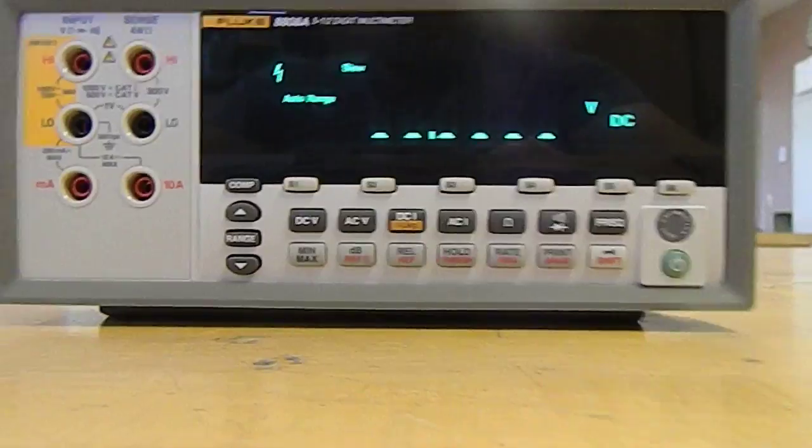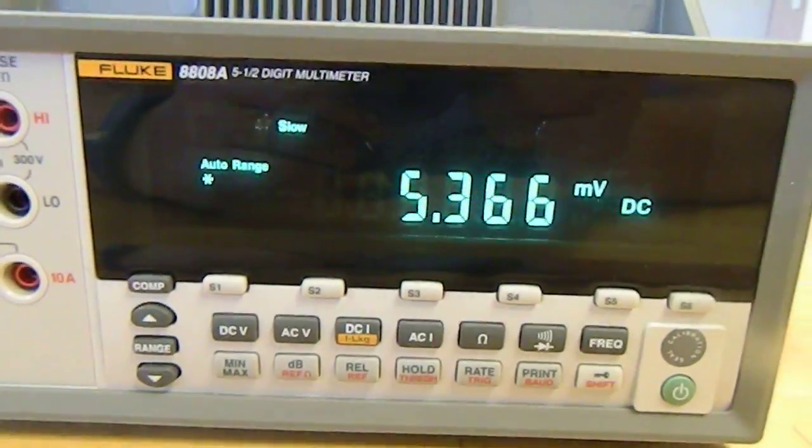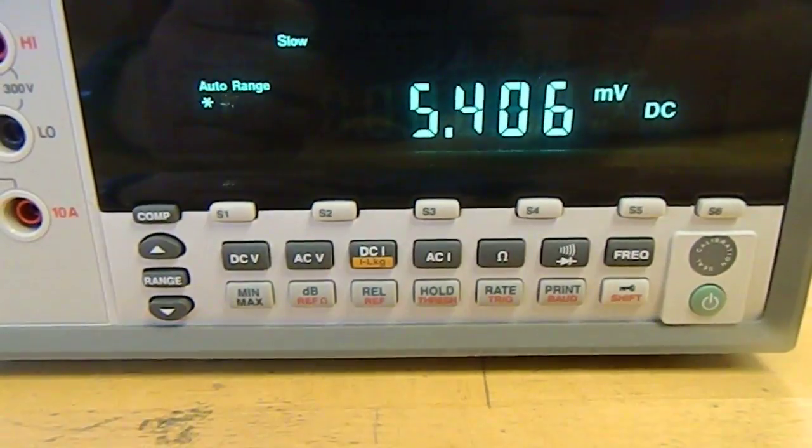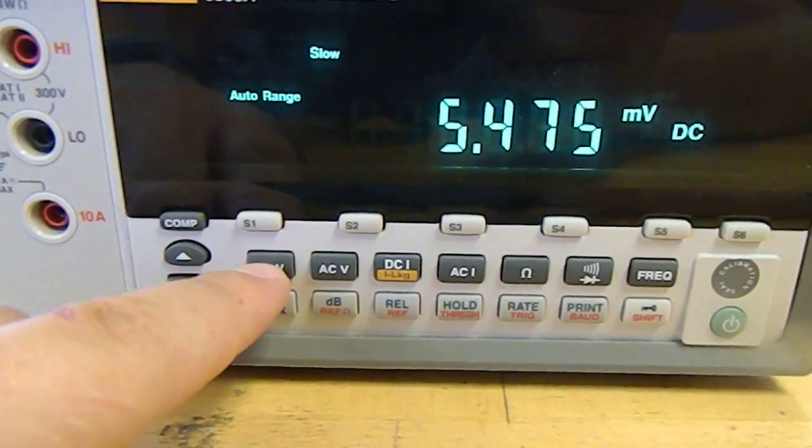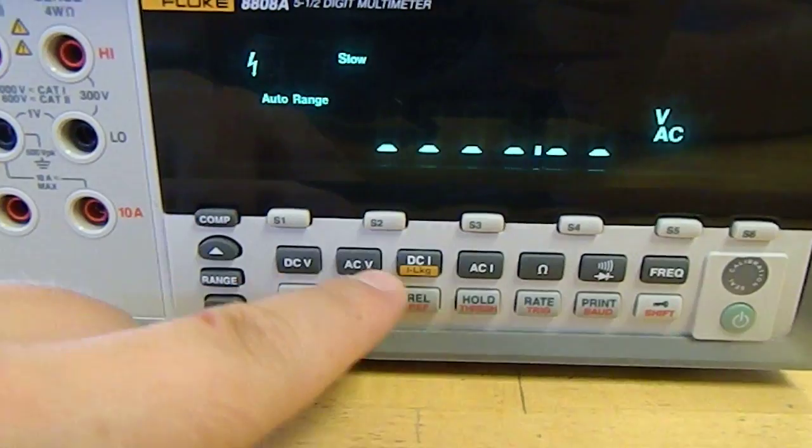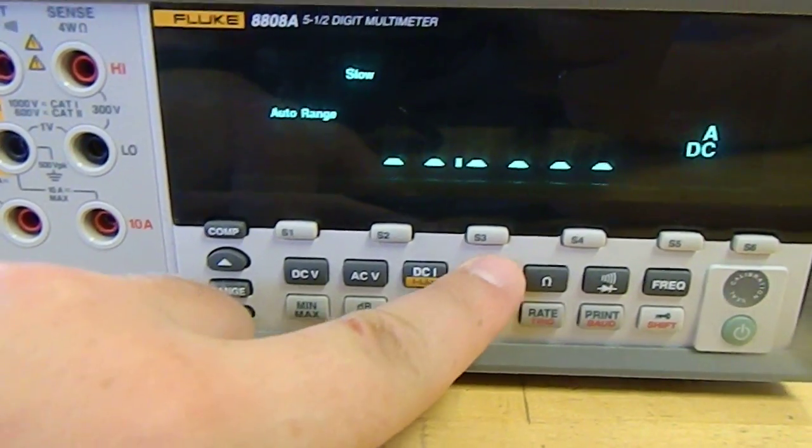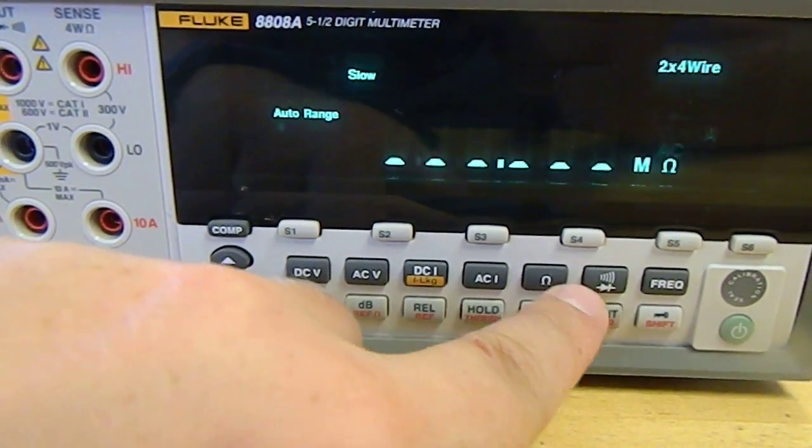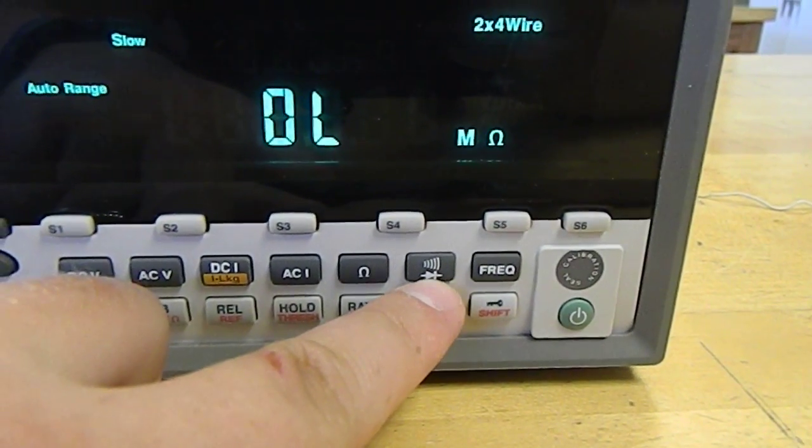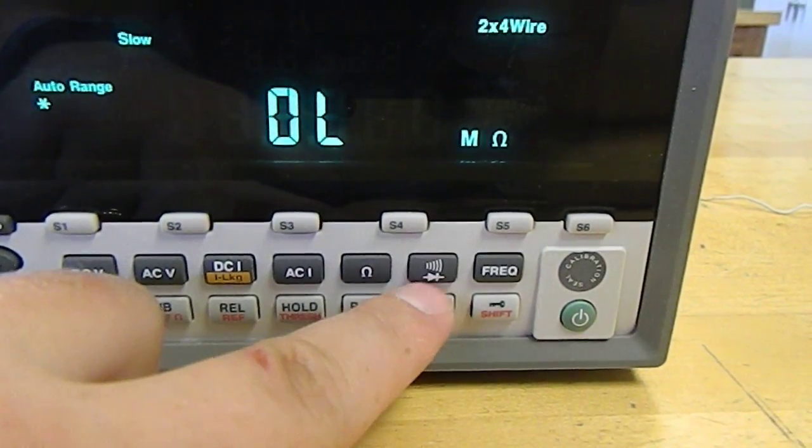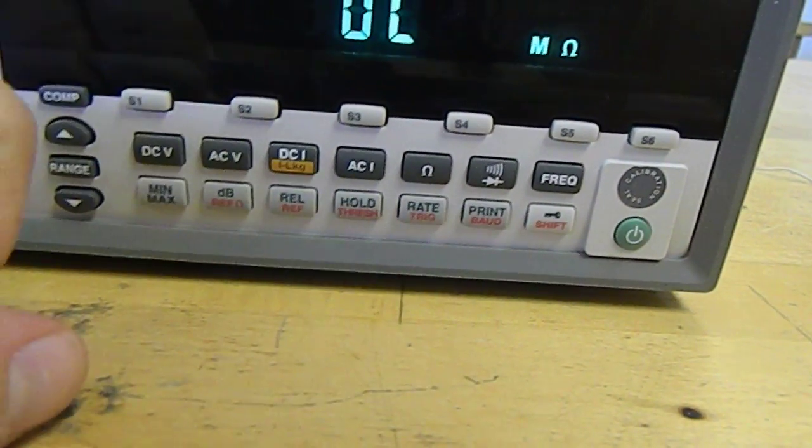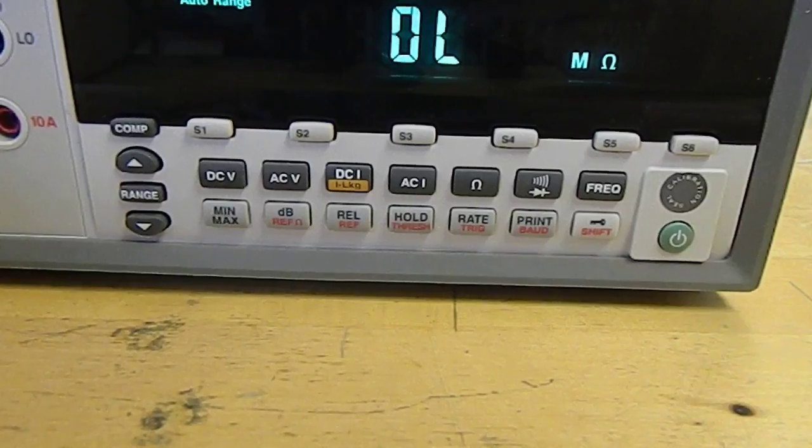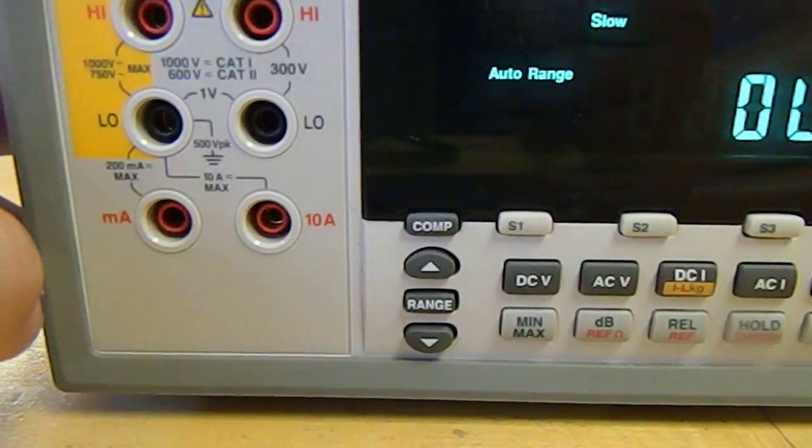So once it's on, you can choose what you want to measure. You can measure DC voltage, AC voltage, DC current or AC current or ohms. It has a diode and short finder, and then some other commands that you probably won't need to use.